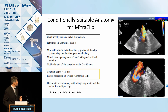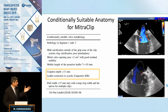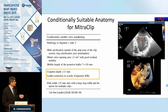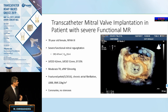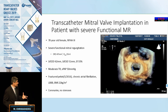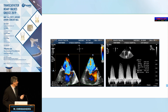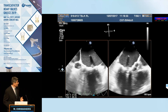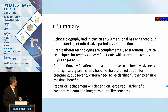PASCAL is also available for functional mitral regurgitation. Even patients with multiple jets or very wide jets can have multiple devices placed with excellent outcomes. Regarding replacement techniques for functional MR, these technologies are still not CE Marked and not readily available, but one patient with severe functional MR and dilated cardiomyopathy received an Intrepid valve with an excellent result.